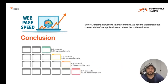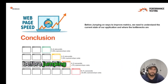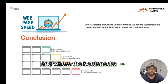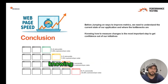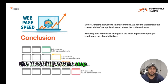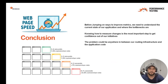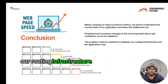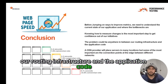In conclusion, before jumping into ways to improve metrics, we need to understand the current state of our application and where the bottlenecks are. Knowing how to measure is the most important step to get confidence out of our initiatives. The problem could be anywhere in between our routing infrastructure and the application code.